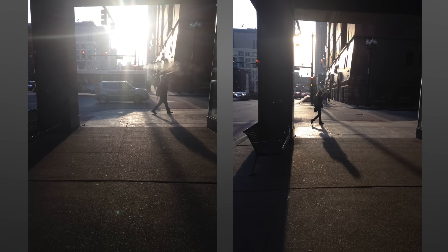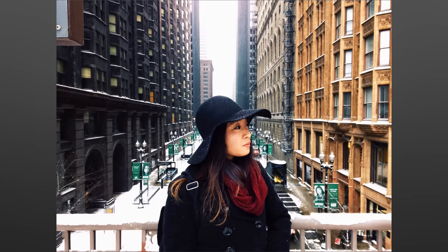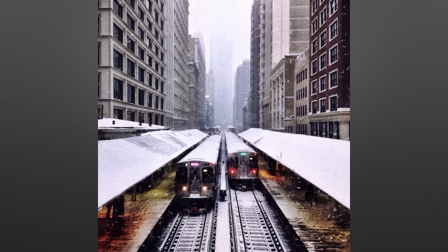It may seem like overexposure is a bad thing from all the examples we've seen, but we can actually use it to our advantage in certain situations to create really outstanding images. A prime example is during winter. In this photo you can clearly see the model's face and the background is completely a white-out sky which complements the snow on the railing and the streets. Even though the photo has been overexposed, everything is in harmony because of the perfect white-on-white color coordination. If you don't overexpose in such settings, you would most likely capture muddy-looking snow which may distract from the beauty you want to capture.